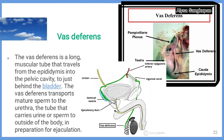Vas deferens. The vas deferens is a long muscular tube that travels from the epididymis into the pelvic cavity just behind the bladder. The vas deferens transports mature sperm to the urethra, the tube that carries urine or sperm to outside of the body in preparation for ejaculation.